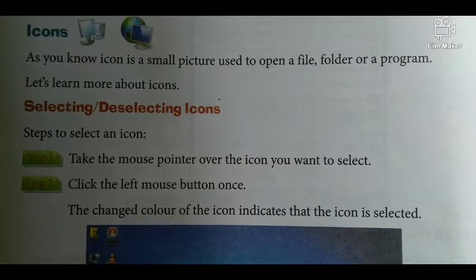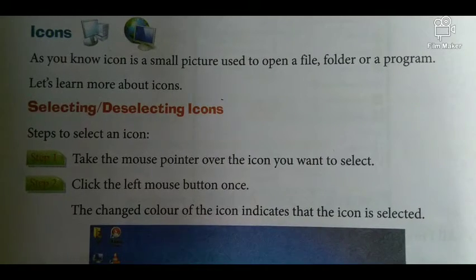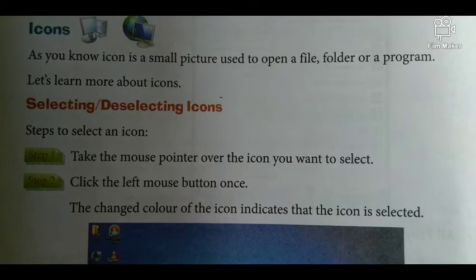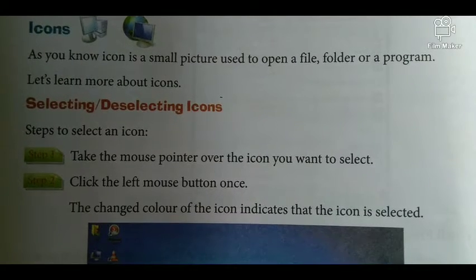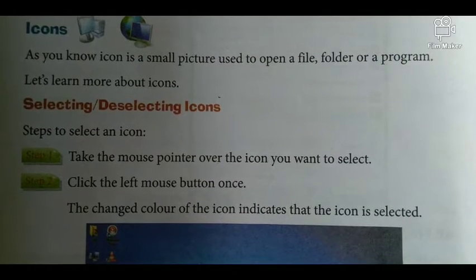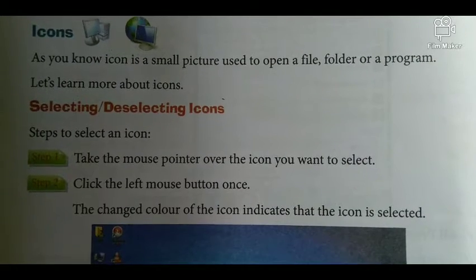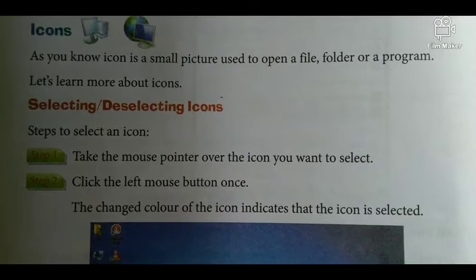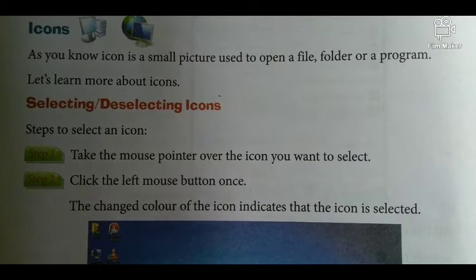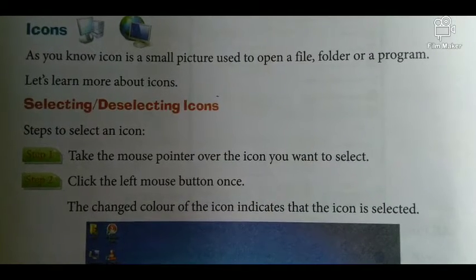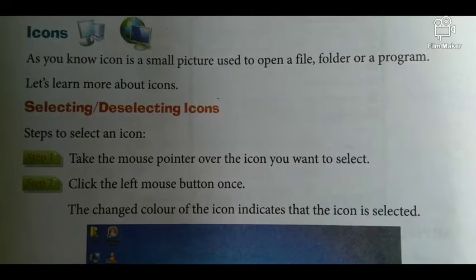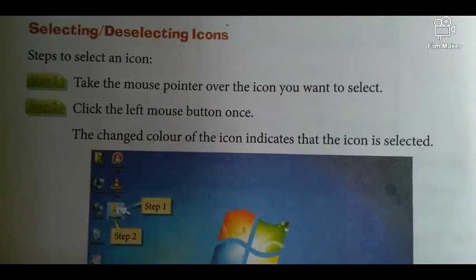Selecting and deselecting icons. Steps to select an icon: Step 1 - Take the mouse pointer over the icon you want to select. Step 2 - Click the left mouse button once. The changed color of the icon indicates that the icon is selected.